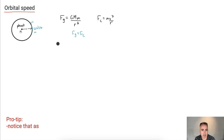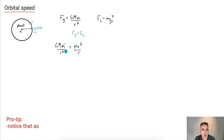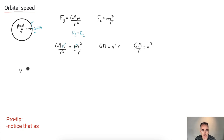Setting FG equals FC gives us: G M m over R squared equals m V squared over R. The lowercase m's cancel out, and rearranging gives G M equals V squared times R, so G M over R equals V squared. Therefore the orbital speed is just the square root of G M over R. This is our equation for orbital speed, and we've just derived it. It's also an equation you get on your data booklet, but you might be asked to derive it.